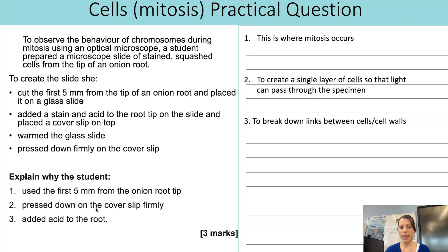And the reason you have to squash it is so you get a single layer of cells. That alone won't get you the mark though. So it's a single layer of cells and that enables the light to pass through the specimen. So you have to have both of those ideas for that one mark. Lastly, this one doesn't get asked as often, but it has come up a few times recently. Why did they warm it with acid as well? And what the acid does is it breaks down some of the links between the cells. And that means it is possible to squash and separate the cells to get a single layer. So that's what they're after there. It breaks down the links between the cells so you can then get that single layer.